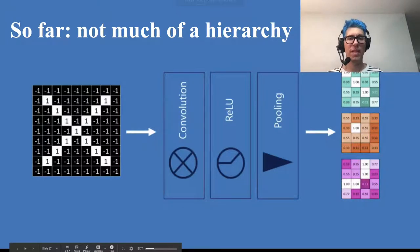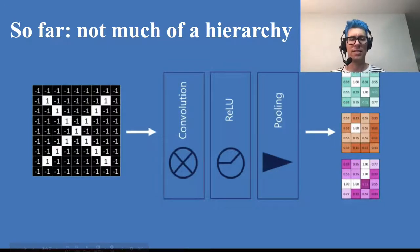So what do we have so far? It's not much of a hierarchy. We have a convolution, a ReLU, a pooling, giving us the results that you can see on the right-hand side.